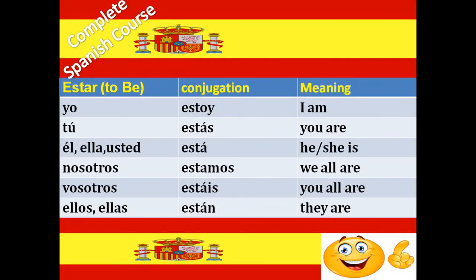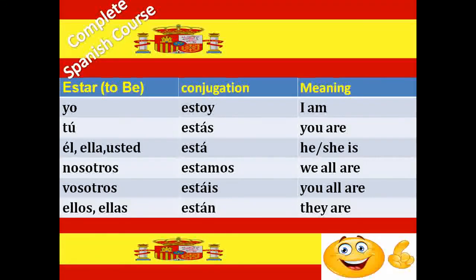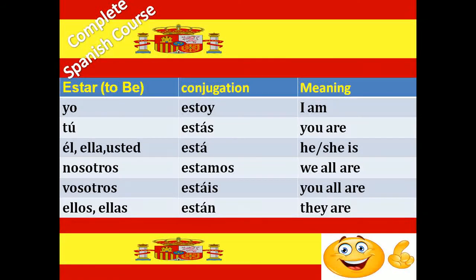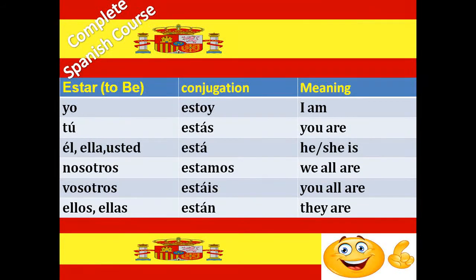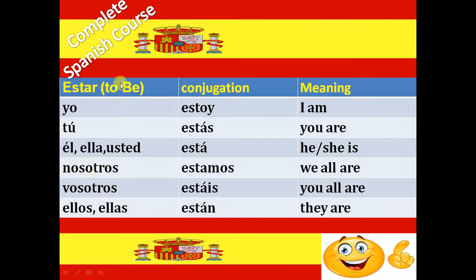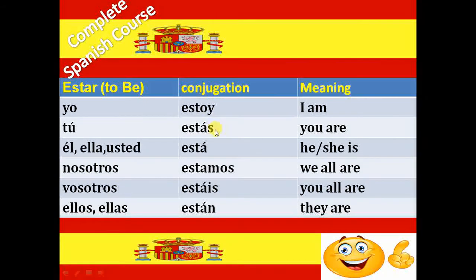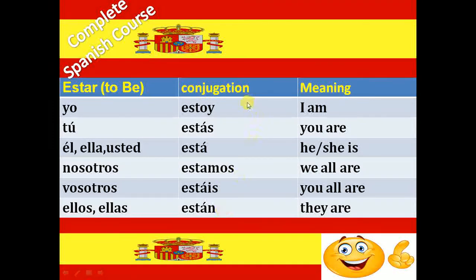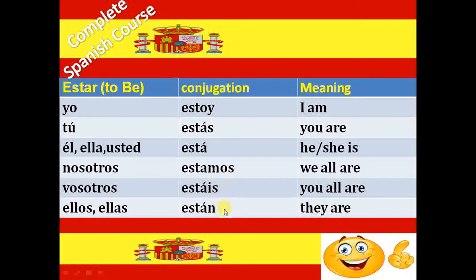Next irregular verb is Estar. Estar verb is also a very very important verb in Spanish. Ser means to be, and Estar also means to be. Where to use Estar verb and where to use Ser verb — we have separate two lectures for this. Here you just have to remember the conjugation. The conjugation of Estar verb is Estoy, Estás, Está, Estamos, Estáis and Están.